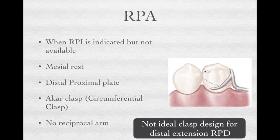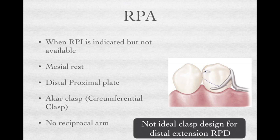That's why some people developed the RPA system. Because an I-bar is not possible, the idea is to combine the circumferential clasp to replace the I-bar, while still keeping the mesial rest and distal proximal plate. So you will have mesial rest, distal proximal plate, and circumferential clasp — which we call the RPA system.